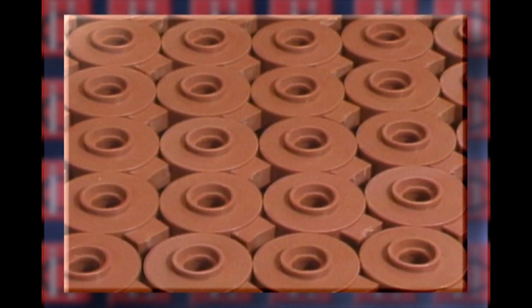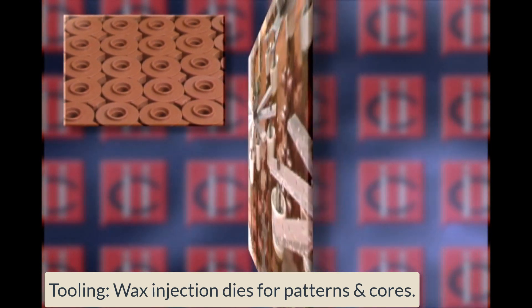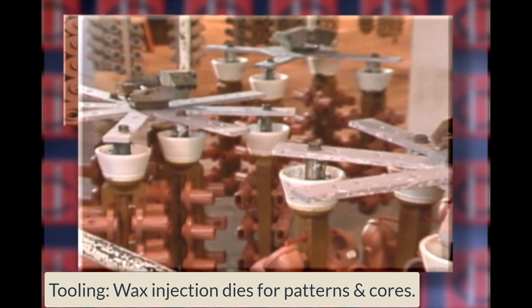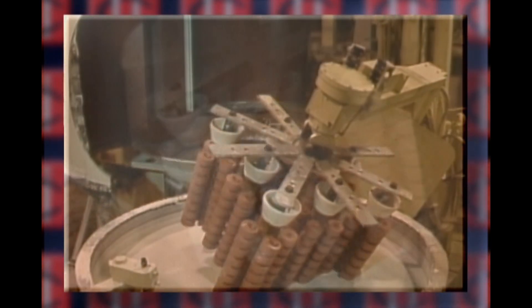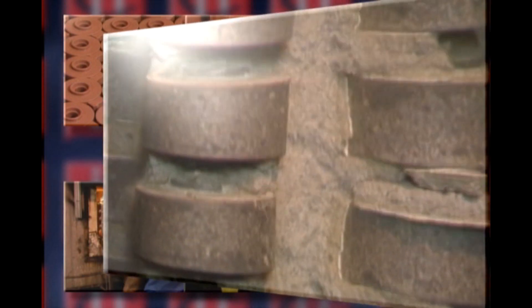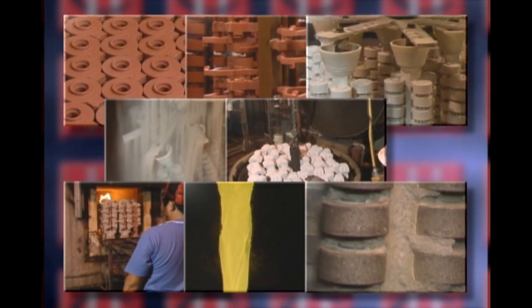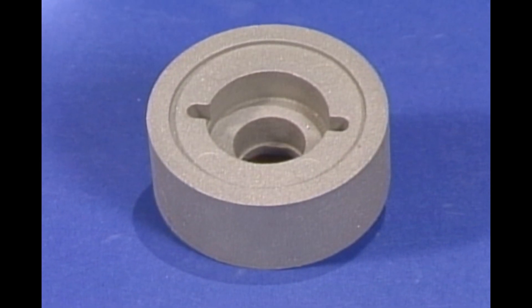In summary, the investment casting begins with a wax pattern made by using a die. The pattern is mounted with others on a tree or assembly. Next, the assembly is given a fine pre-coat of stucco followed by several coarser coats of stucco. The wax is removed in a steam autoclave and the ceramic shell fired. The molten metal is poured into the shell by a transfer ladle. After cooling, the ceramic shell is removed by vibratory methods and the finished casting appears looking exactly like the original wax pattern.